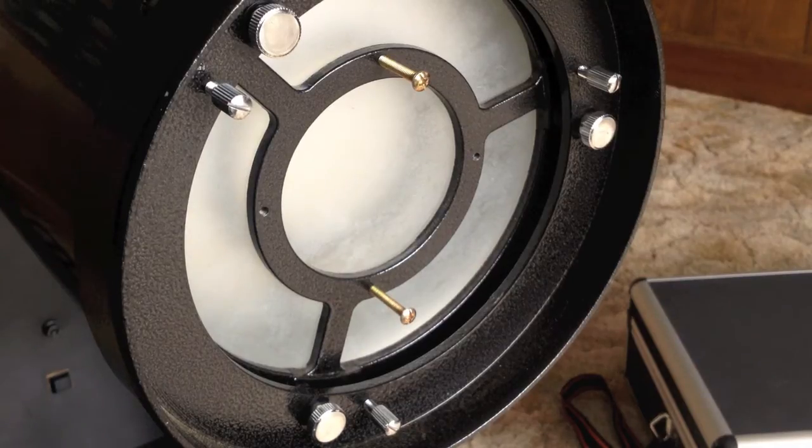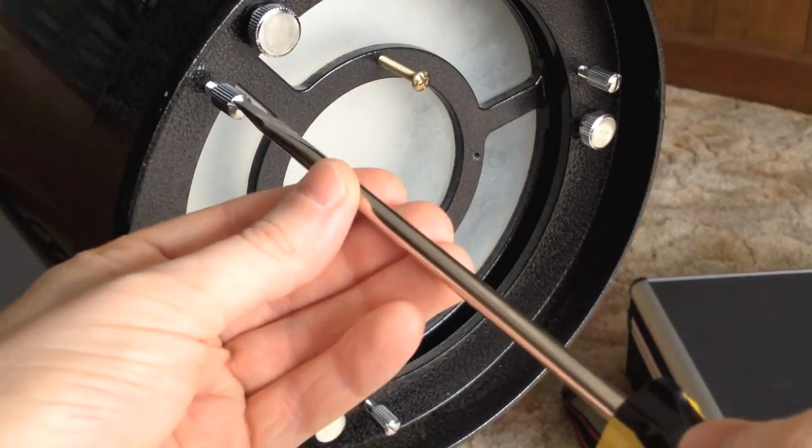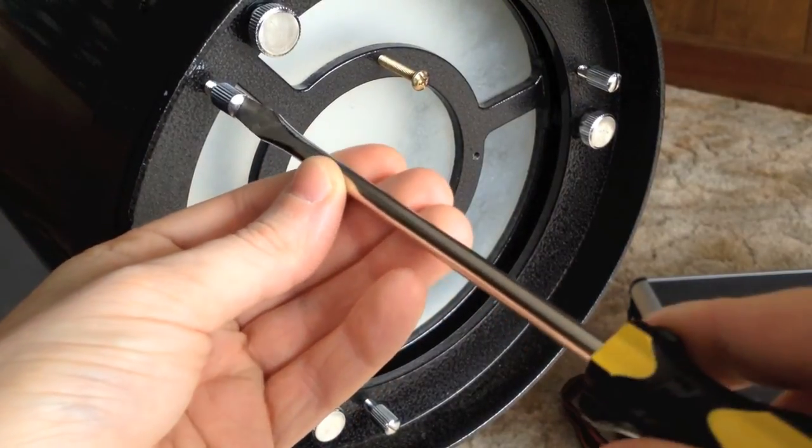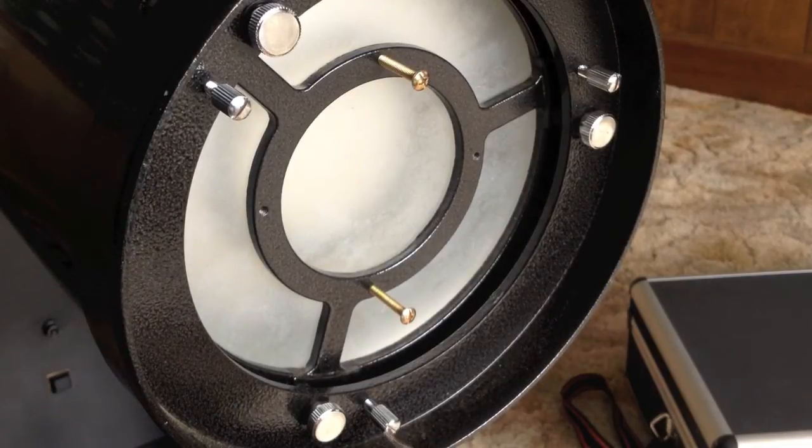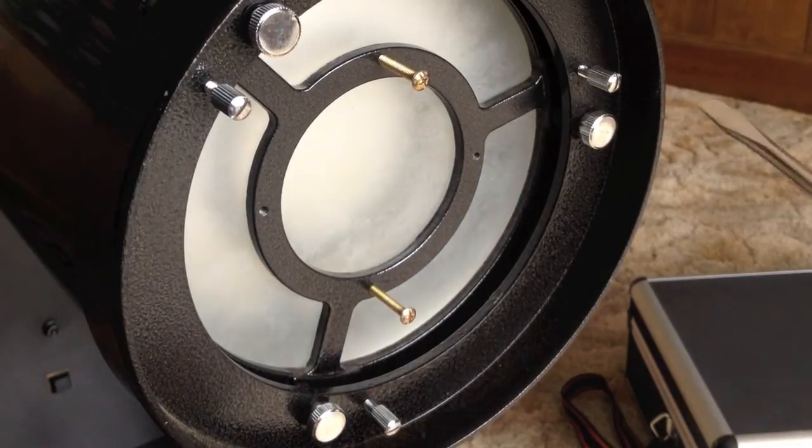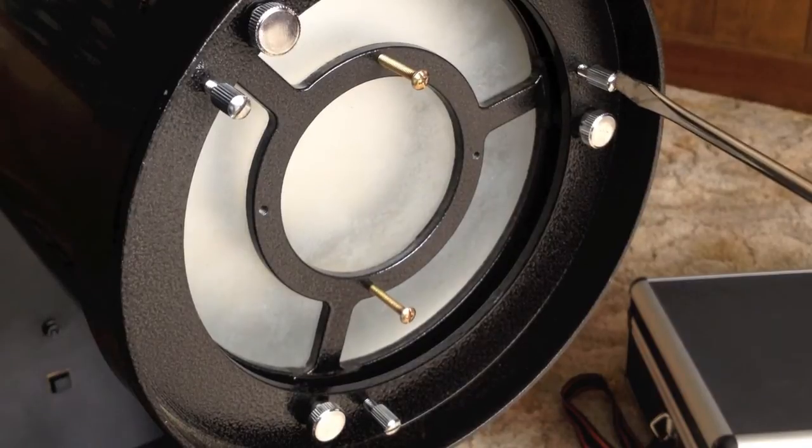Before you collimate the primary you have to loosen each of these screws so that you can make the minor adjustments on the primary mirror. When you're done you can tighten these up.